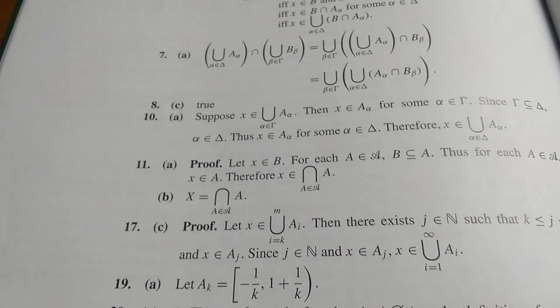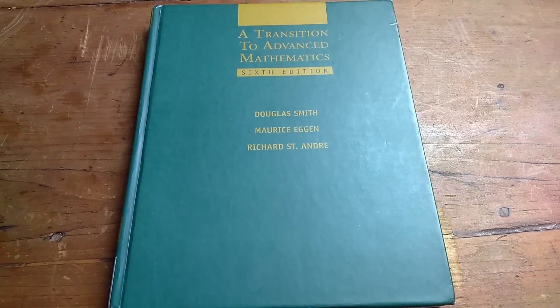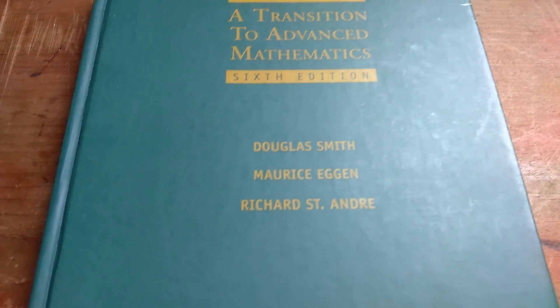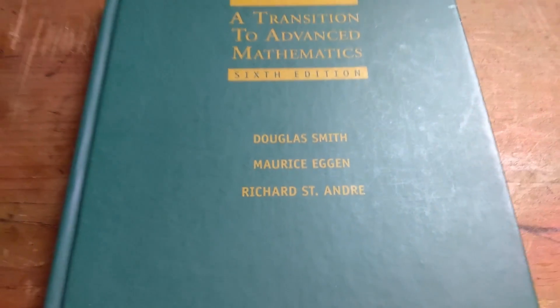So again, the book is A Transition to Advanced Mathematics. This is the sixth edition, and the authors are Douglas Smith, Maurice Eggen, and Richard St. Andre. That's it.